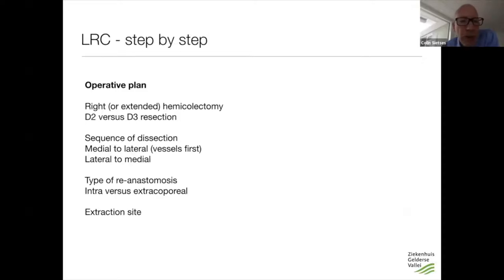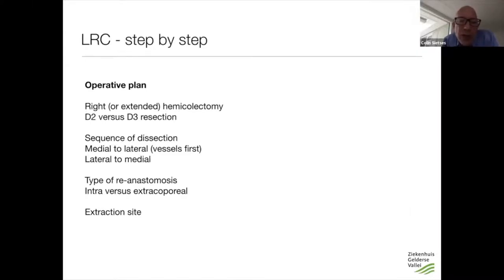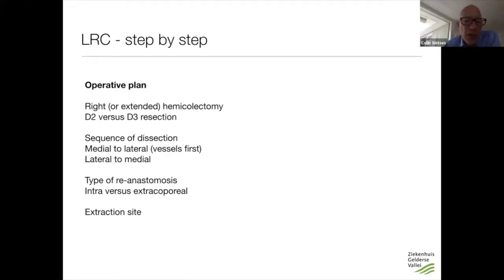If you do a laparoscopic right hemicolectomy, like any other operation, you need an operative plan. Andreas already talked about D2 versus D3 resection, but you also have to decide what kind of operation you're going to do — a standard straightforward laparoscopic right hemicolectomy, or a more extensive one. You have to decide the sequence of dissection: medial to lateral with vessels first, or the more traditional lateral-first approach. You also have to decide extracorporeal versus intracorporeal anastomosis, and your extraction site.